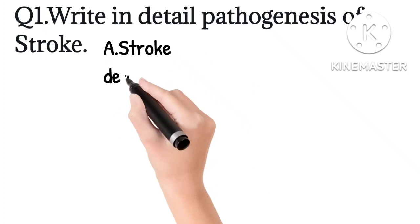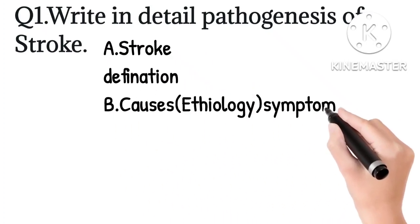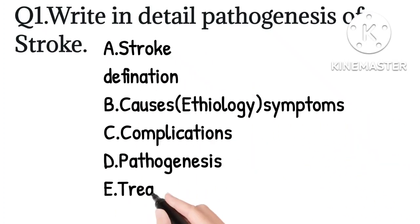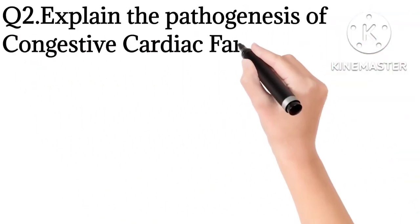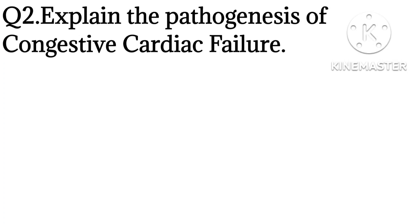For the pathogenesis of stroke, if you write only the pathogenesis directly, you will get only two marks. First, write the definition of stroke, then causes, then symptoms, complications, pathogenesis, and treatment. Causes is also known as etiology — keep that in mind. If you write this type of detailed description, you will definitely get 8 out of 10.